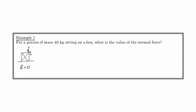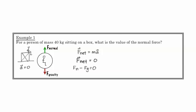If we draw a free body diagram of the person, the forces that are acting are gravity pulling the person down and the normal force from the box pressing upwards. Because the acceleration is equal to zero, we know that the net force is going to be zero.